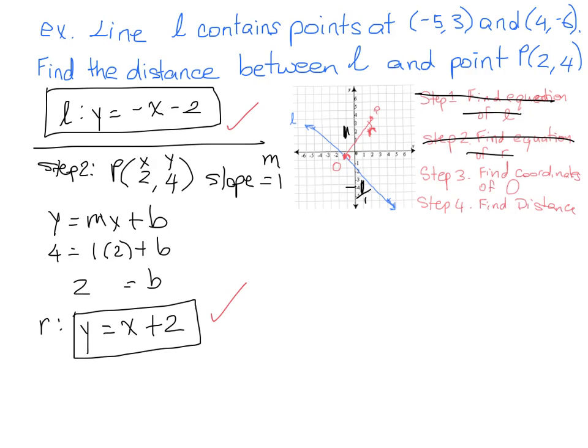So keep in mind that line L and line R do meet at point O. So you want to solve this equation simultaneously. So we have here that Y is equal to negative X minus 2, and Y is equal to X plus 2. And where these two equations meet is the point that we are looking for. So we can do a little substitution here. Since Y is this, and Y is also this, that means this has to be equal to this. So we can now just write that negative X minus 2 is equal to X plus 2.